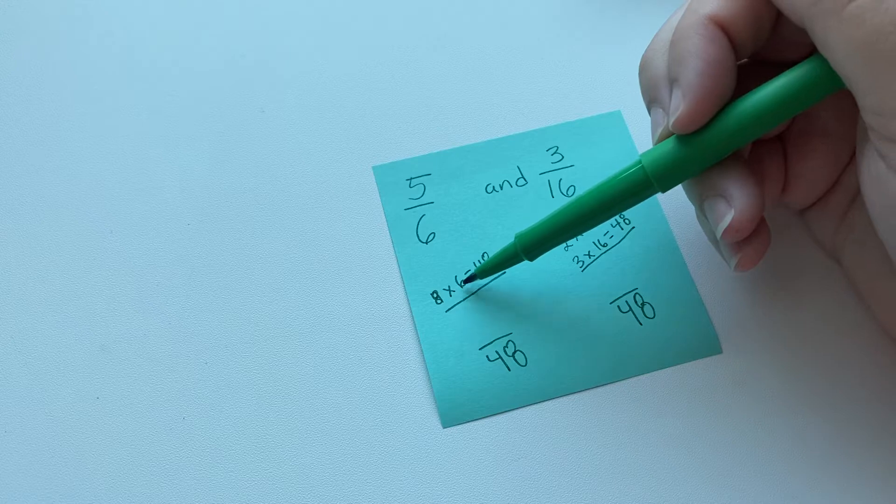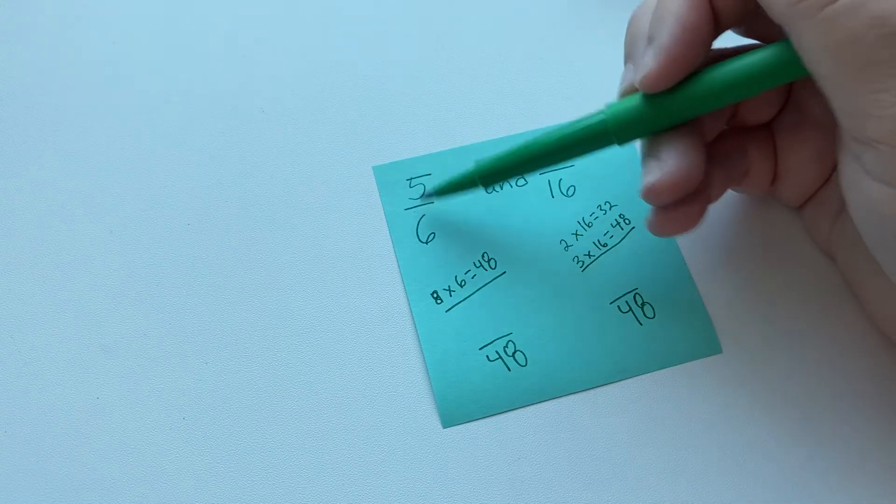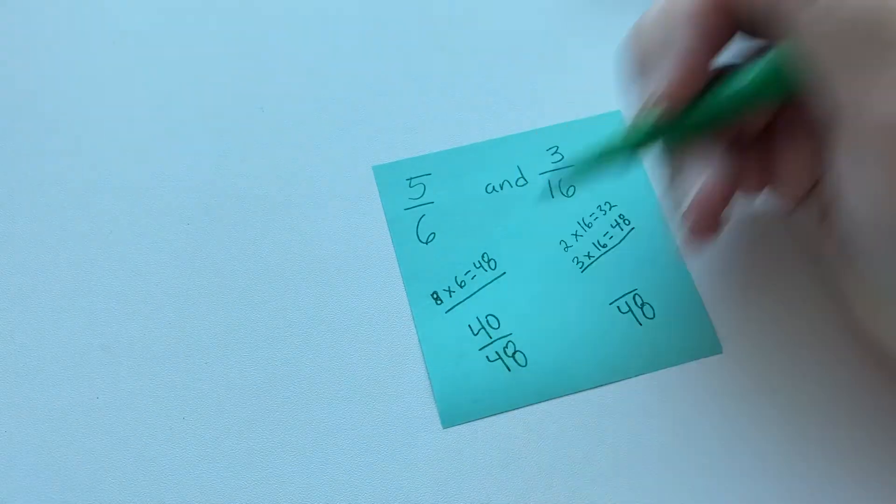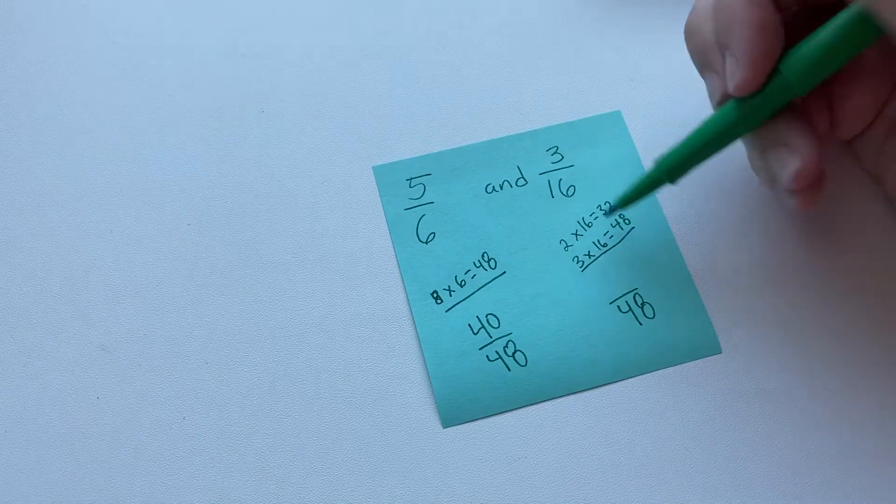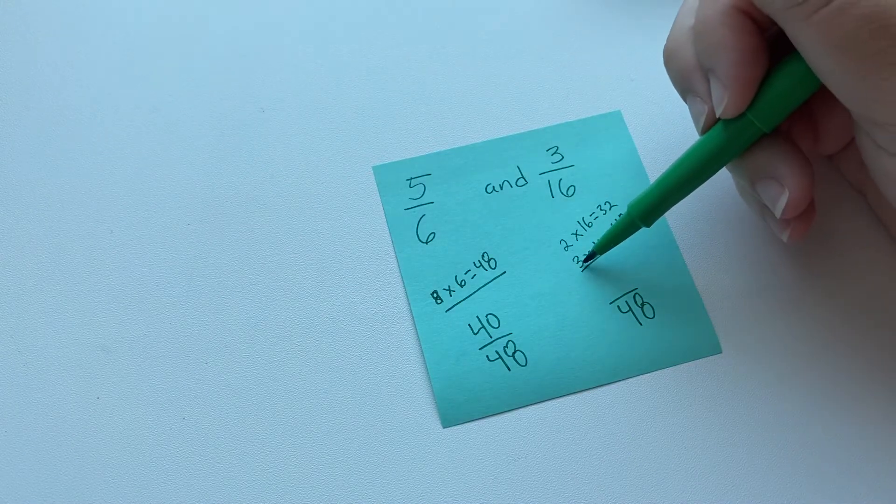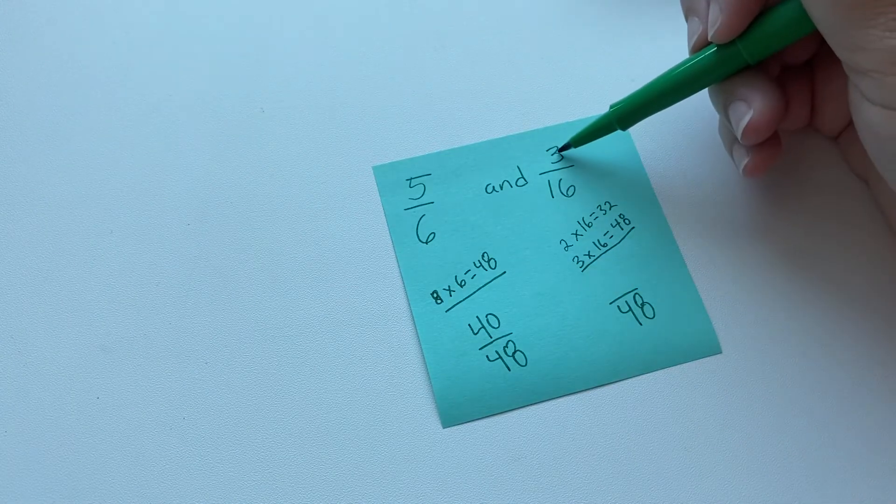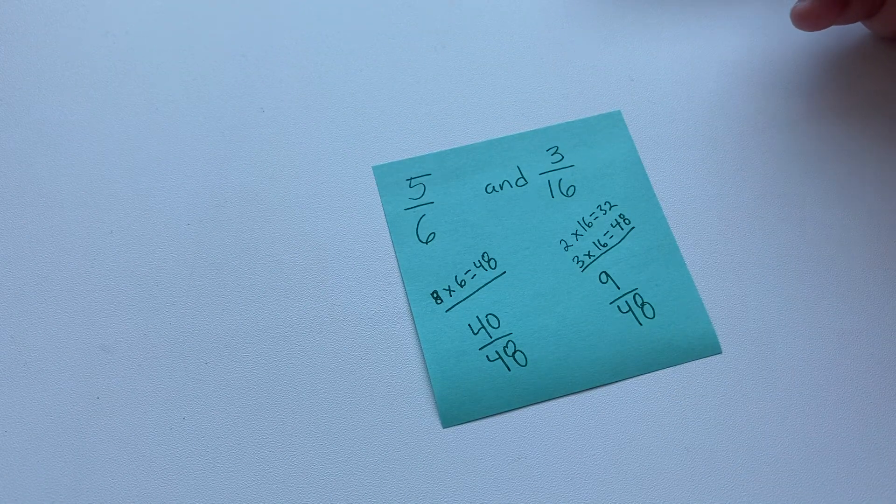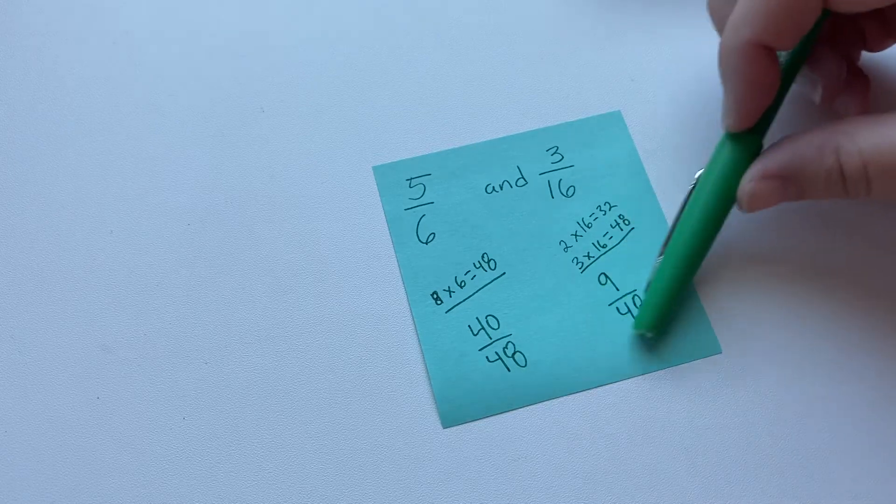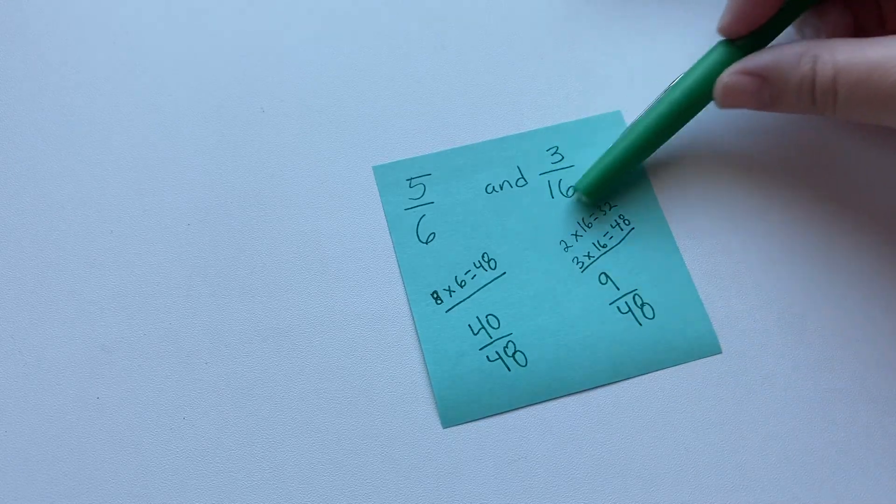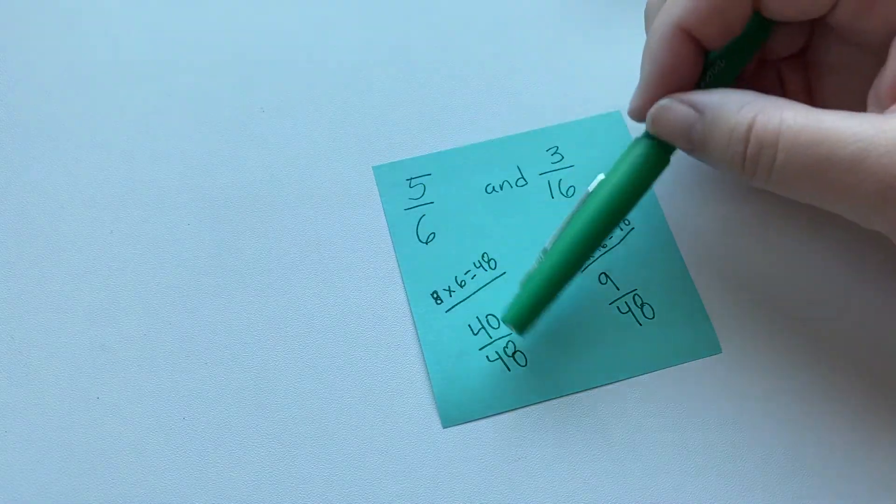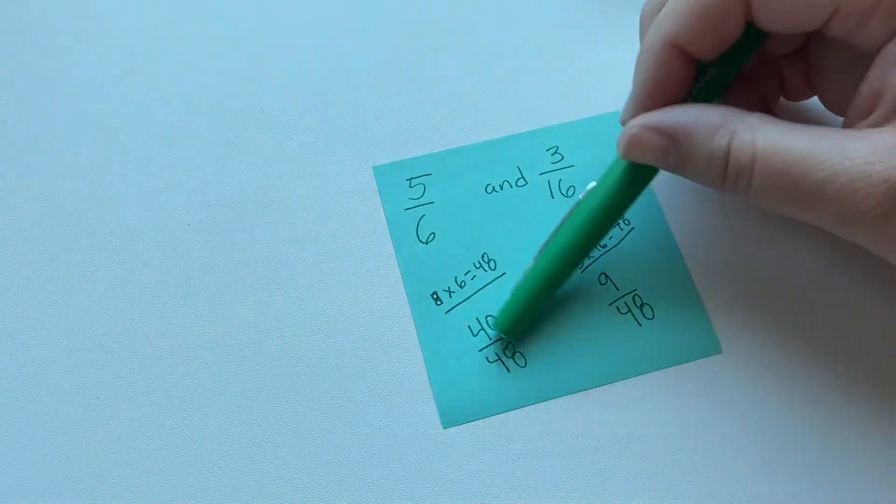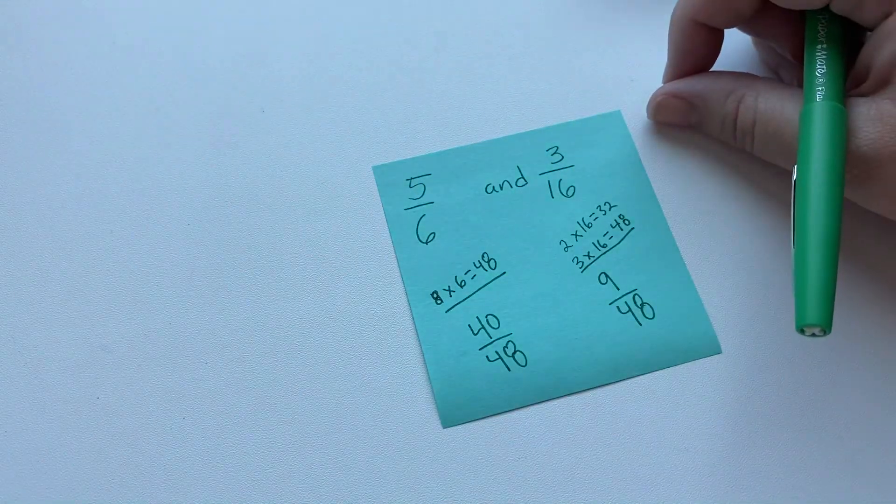And then since we multiplied 6 times 8, we're going to multiply 5 times 8, and we get 40. And since we multiplied, this was our common denominator, it was 16 times 3. Then we're going to multiply this numerator by 3, and we get 9 over 48. And you can kind of just check to make sure those numbers make sense. 9 48ths does seem about the same as 3 16ths. And 5 6ths is a similar kind of number to 40 48ths.